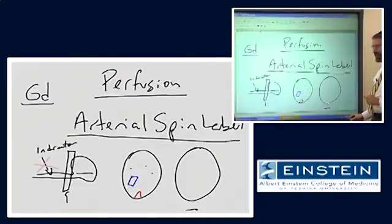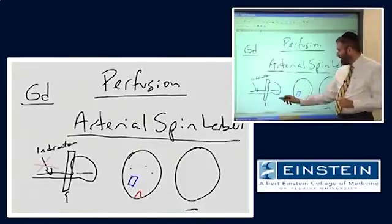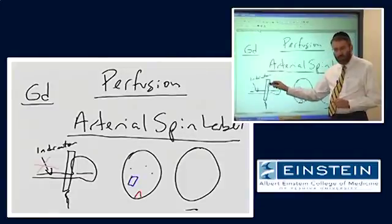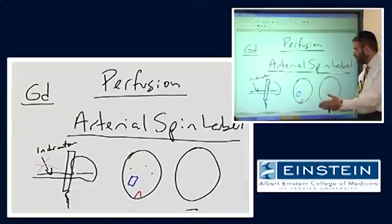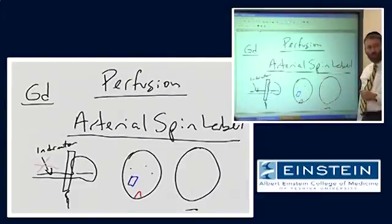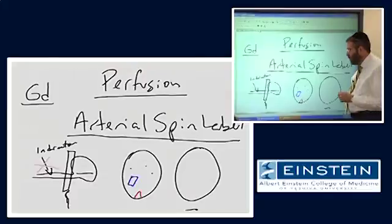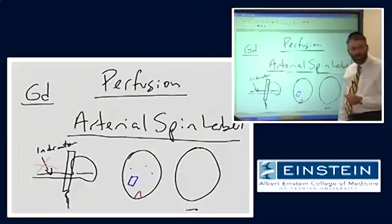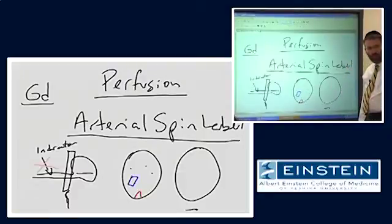What happens then? During the time period between applying this inversion pulse, not to the brain, but to that slice of neck, between that time and when I actually acquire my image, what's happening to the magnetization of the spins which are flowing through toward the head? They are slowly recovering that longitudinal magnetization.